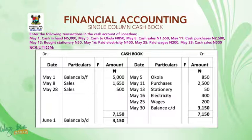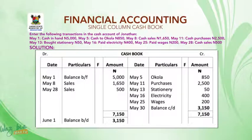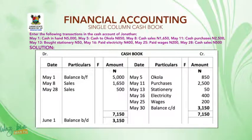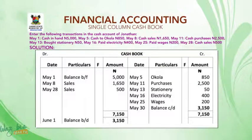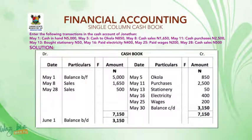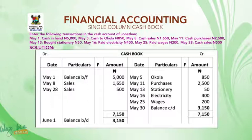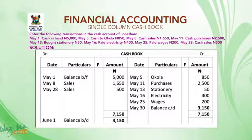May 13, bought stationery — whenever you buy, money goes out. This is 50 naira, so on the credit side, under date write May 13; under particulars write 'stationery'; and under amount write 50 naira. May 16, paid electricity, 400 naira — paid electricity means money goes out. So you will credit this transaction: under particulars write 'electricity'; and under amount write 400 naira.